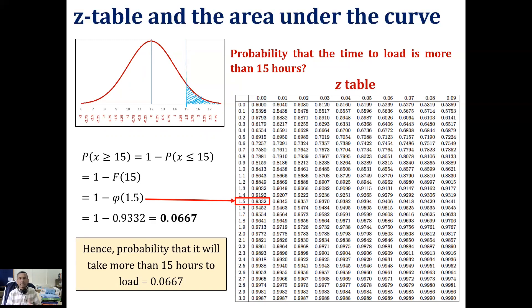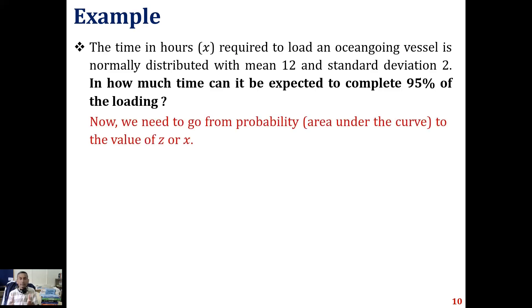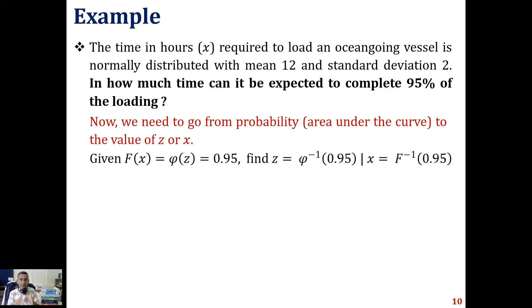We can also go in the inverse direction: given an area, find the value of z or x. In the same problem, we ask: in how much time can we expect to complete 95% of the loading? We are given F(x) = Φ(z) = 0.95 and need to find z = Φ⁻¹(0.95), or equivalently x = F⁻¹(0.95). We draw the normal distribution graphs for x and z and mark the area corresponding to 0.95.